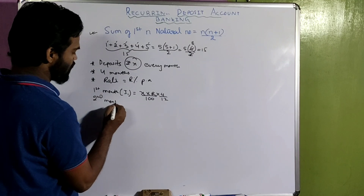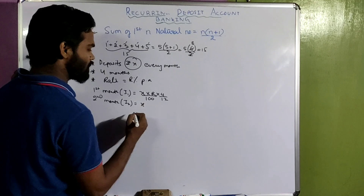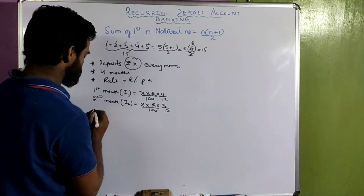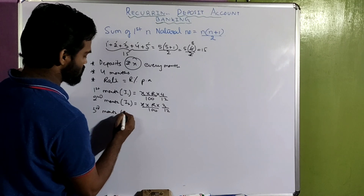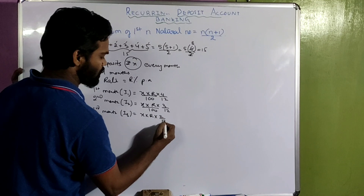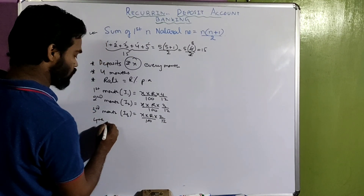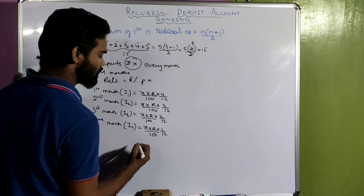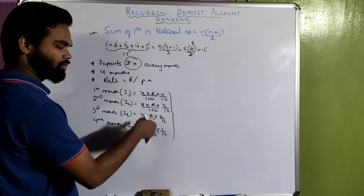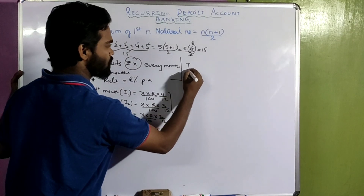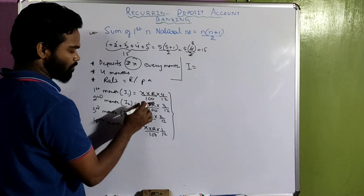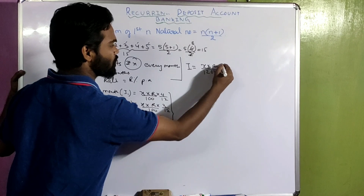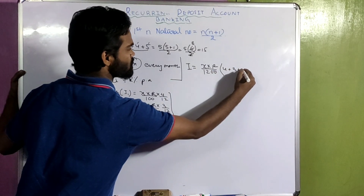For the second month, he deposits rupees x again, so the interest I₂ = x × r × 3/12 × 1/100, since that money stays for three months. Similarly I₃ = x × r × 2/12 × 1/100, and I₄ = x × r × 1/12 × 1/100. Adding all interests, the common factor x×r/1200 comes out, giving x×r/1200 × (4+3+2+1).